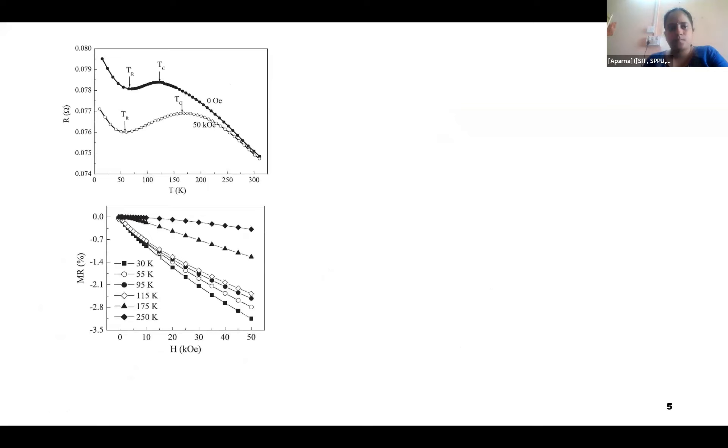From the resistivity measurement, from the transport property, that is the resistivity measurement of the literature, of the melt-spun ribbons, they have reported both with the application of the field and without the application of field. They obtained a negative slope below the transition temperature, indicating a semiconducting behavior.